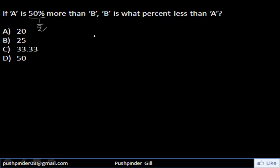A is 50% more than B. That means A equals B and it's 50% greater than B. So A is the sum of B and 50% of B. From here, I can say that A equals, if I take B common, 50% is equivalent to 1/2. So this is the equation.